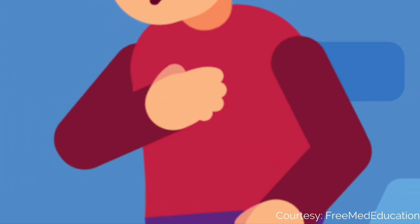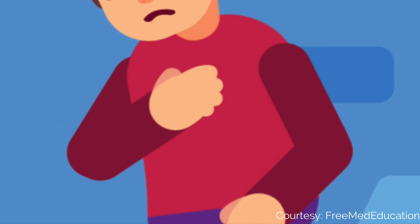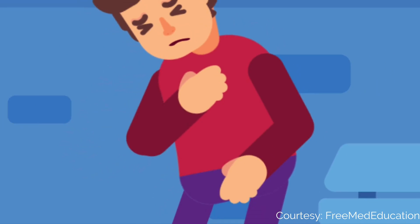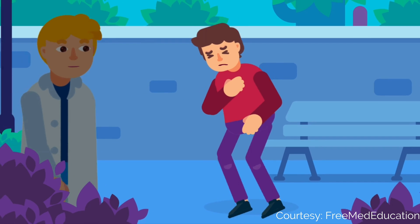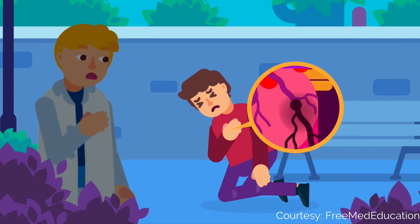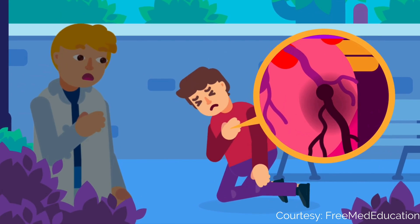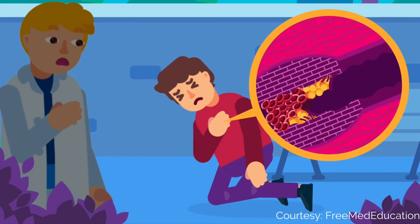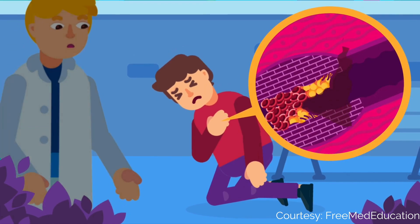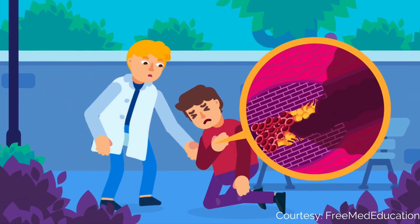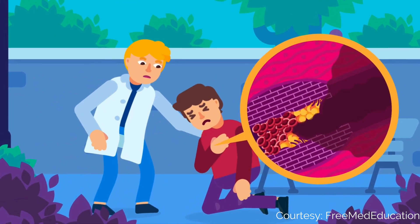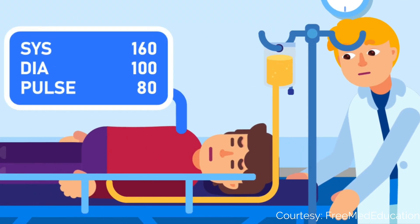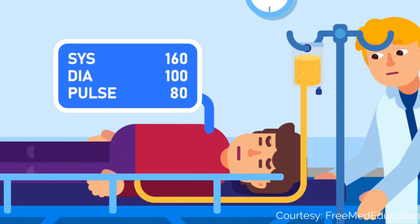CHD commonly induces angina pectoris, or chest pain, and shortness of breath. This could be due to the malfunction of the cardiac muscles — parts could die owing to the lack of oxygen delivered by the clotted blood. CHD can also be caused by hypertension, which happens when blood flows through the blood vessels at a consistently high pressure.